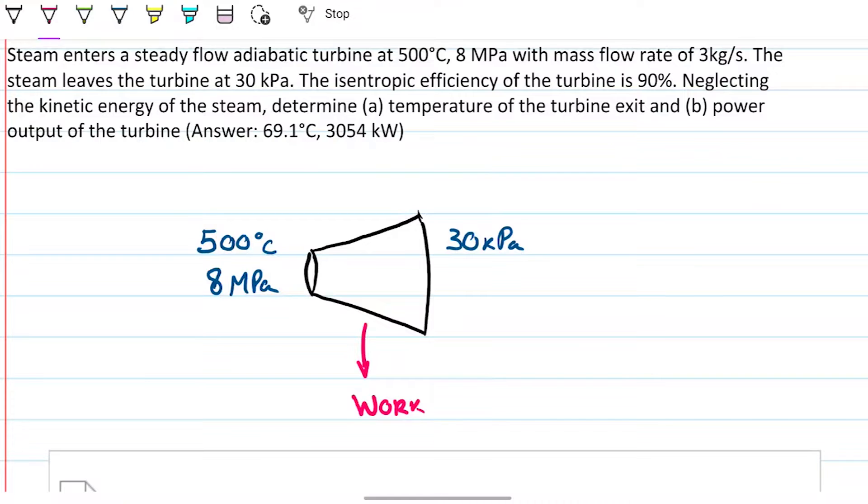Hello and welcome back to Engineering Hack, where we try to solve engineering problems in a way that's hopefully easy to understand. Today we're looking at a problem in which we have a turbine. It's taking high quality fluid, in this case steam, and putting it through this expansion process, getting a lower quality fluid at the other side and outputting some work. In this case we're given the isentropic efficiency and we need to work our way backwards to find the information that is required.